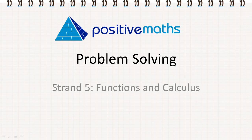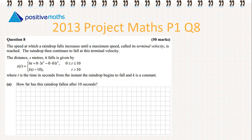In this video for Positive Maths we're going to look at problem solving for Strand 5: Functions and Calculus. We're going to look at 2013 Project Maths Paper 1 Question 8. The speed at which a raindrop falls increases until a maximum speed called its terminal velocity is reached. The speed s in meters is given by s(t) = 6t + 0.3t² − 0.01t³, where 0 ≤ t ≤ 10. Then it falls at a constant speed k(t − 10) when t > 10, where t is time in seconds and k is a constant.